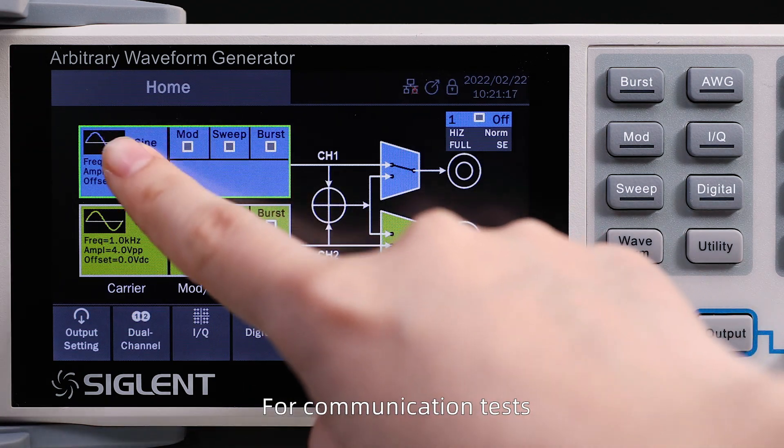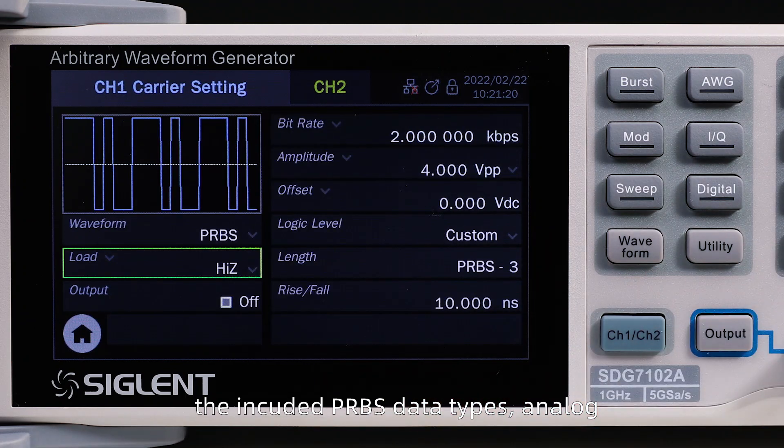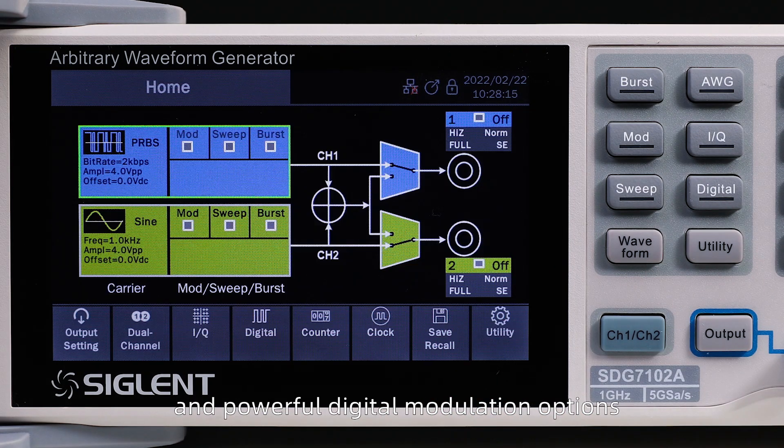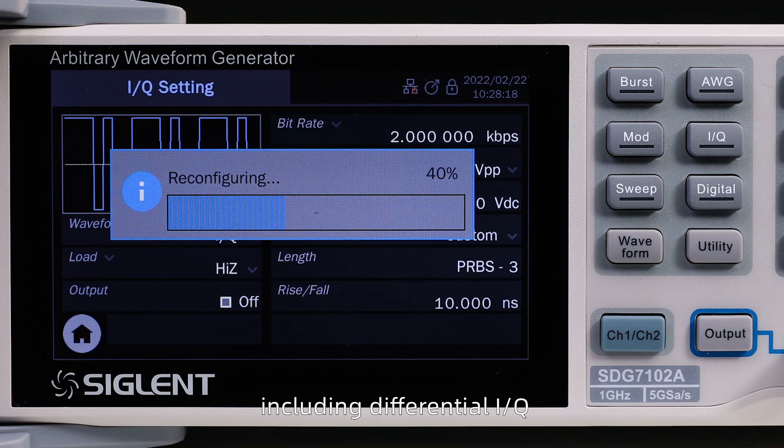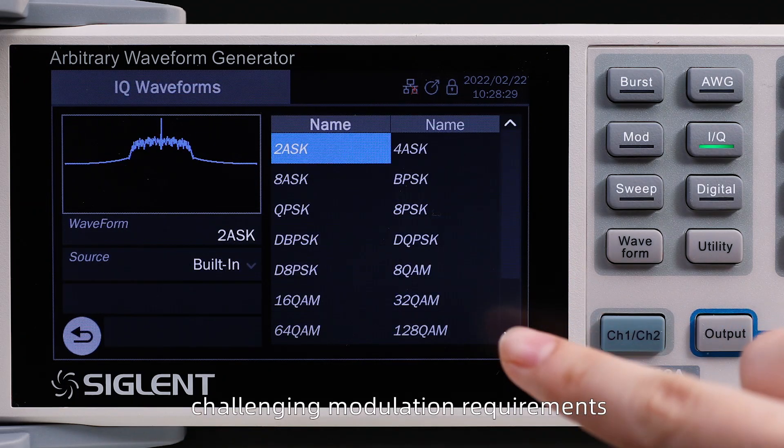For communication tests, the included PRBS data types, analog, and powerful digital modulation options, including differential IQ, make quick work of the most challenging modulation requirements.